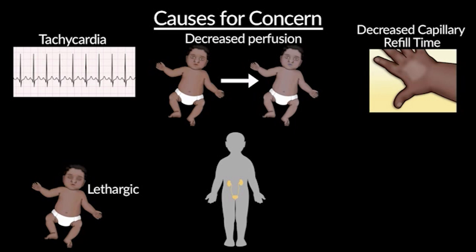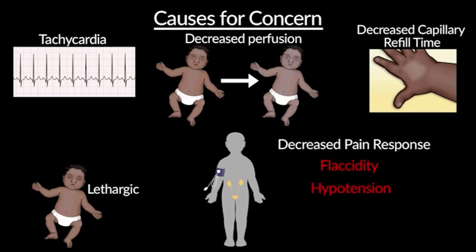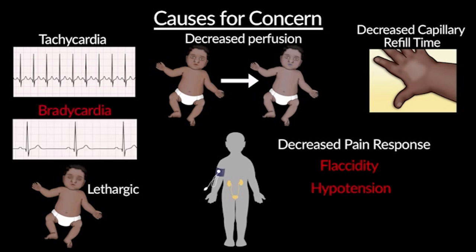Some of the late signs that your child is in impending cardiovascular collapse may be decreased pain response or total lack of response — they've become flaccid and their tone is low. Finally, they're experiencing hypotension or a low blood pressure, or bradycardia. These are typically impending signs of doom. Again, it is important to note that the lack of a central pulse indicates immediate need for CPR and chest compressions, and the emergency system should be activated.